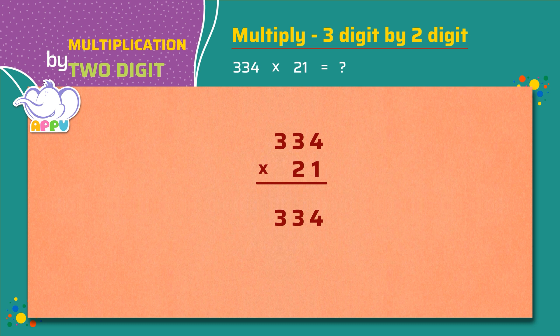We place 0 in the ones place below 4. We now multiply the number in the ones place by 2, which is 4 times 2 equals 8. We write this in tens place.